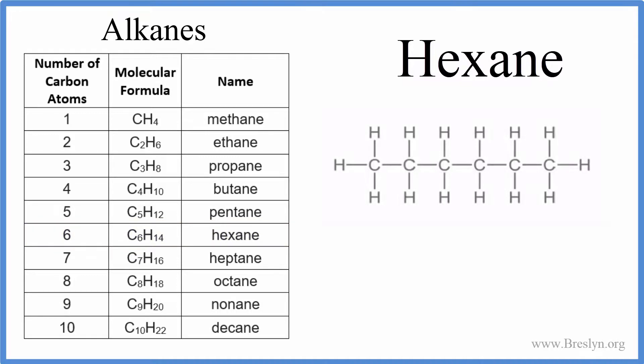If we write the structure for hexane here, we can see we have our carbons here, all six of them, and they're surrounded by hydrogens by those single bonds.